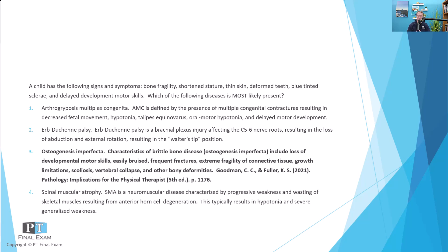Erb's Duchenne palsy, or Erb's palsy, is a brachial plexus injury typically affecting the upper brachial plexus at C5 and C6. This results in loss of abduction and external rotation as well as elbow flexion, leaving the patient in what's called the waiter's tip deformity — elbow extended, arm internally rotated, and hand in flexion, as if reaching behind you to receive a tip.